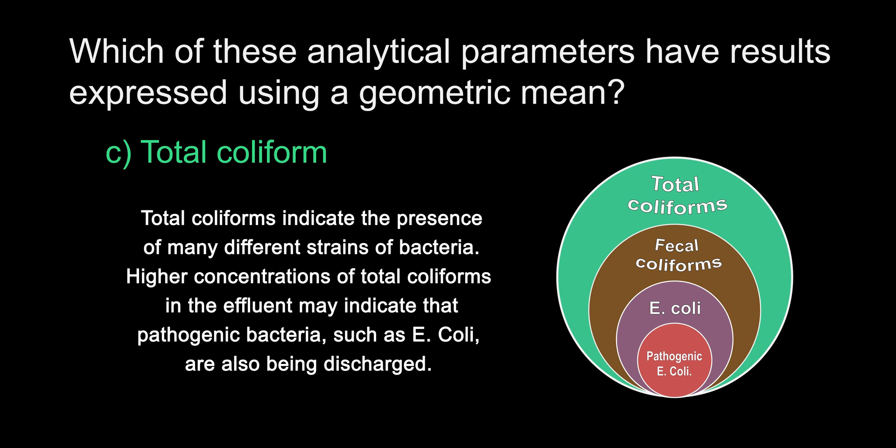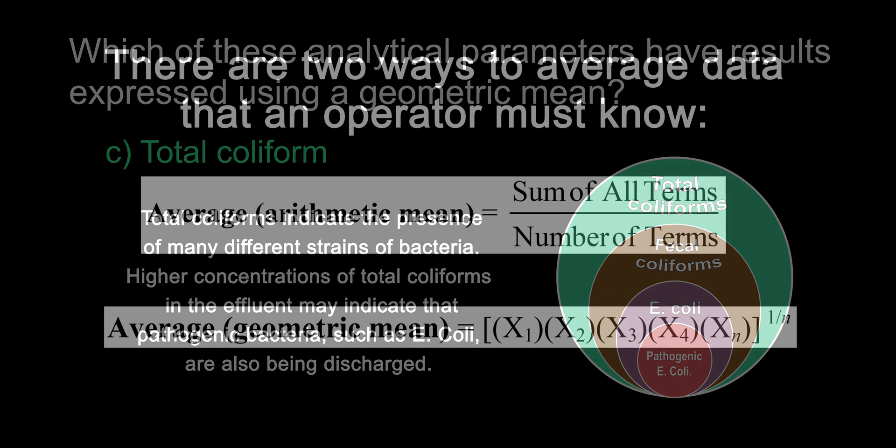Total coliforms are a group of bacteria that are found in the environment. They are not harmful in and of themselves, but their presence in water can be a sign of another group called fecal coliforms, which then could indicate even more harmful bacteria, such as the E. coli subgroup of bacteria. Operators commonly test for total coliforms as a way to ensure the safety of their effluent being discharged.